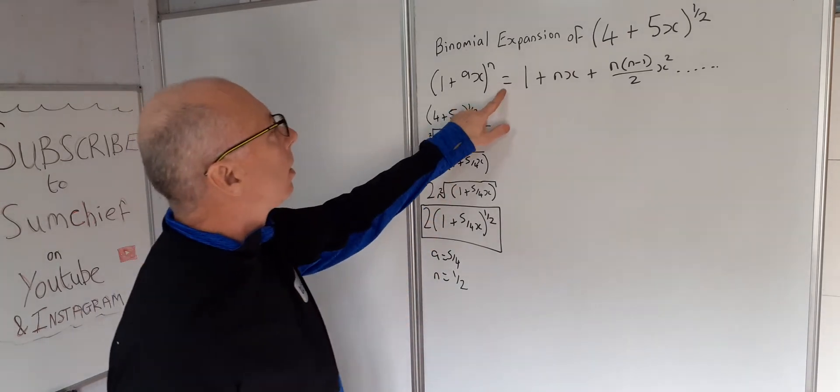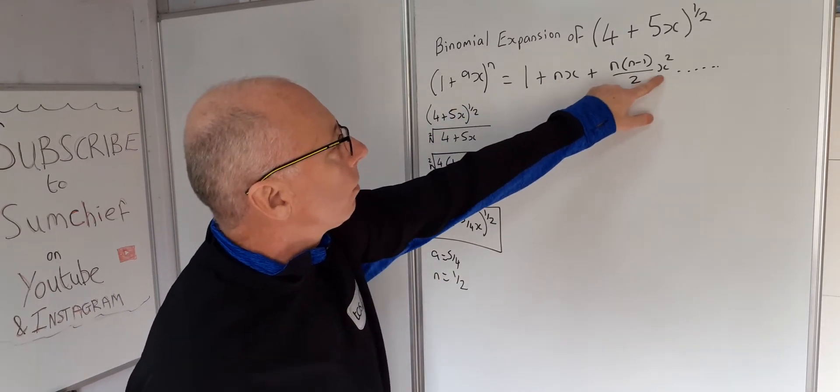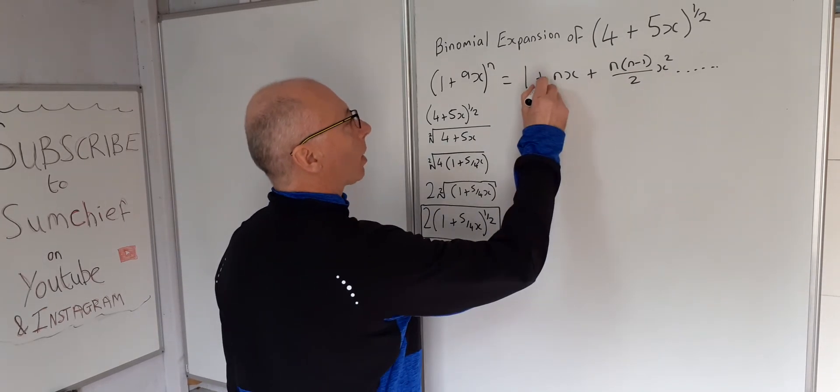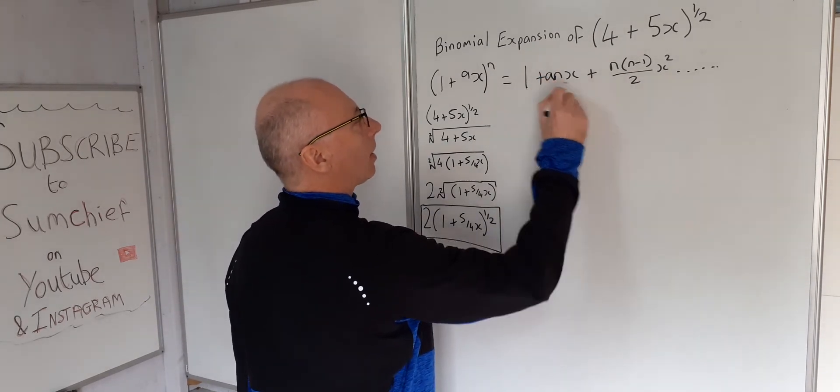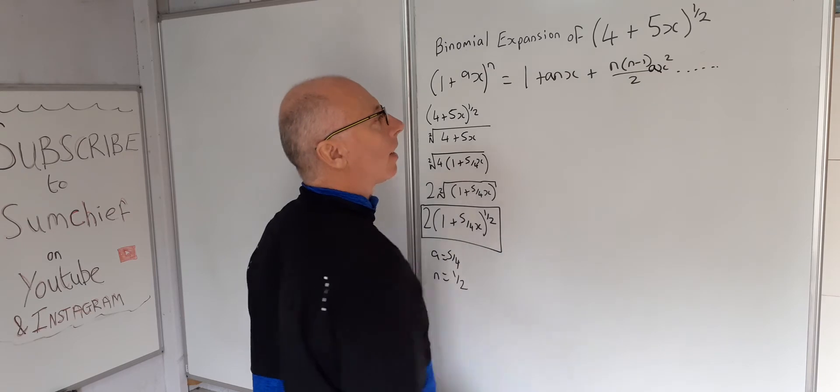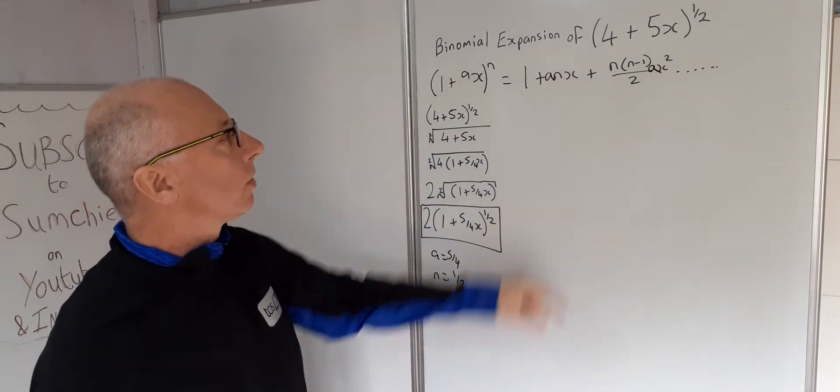Now this a here, we can put that as the coefficient for our x's. So what we can add in here now is an a there, and an a there, just to make sure we put this 5 over 4 through all this formula.